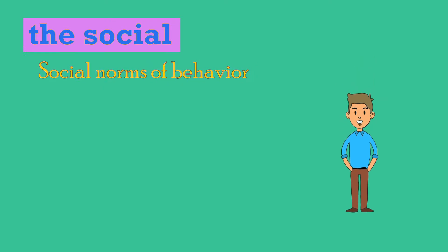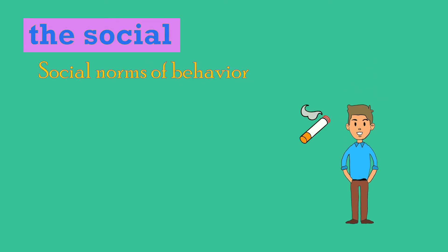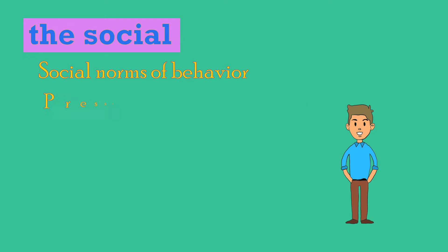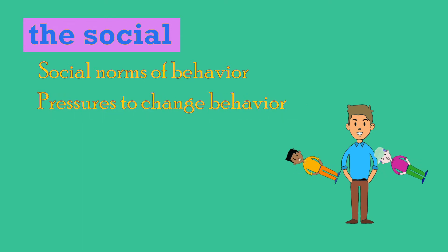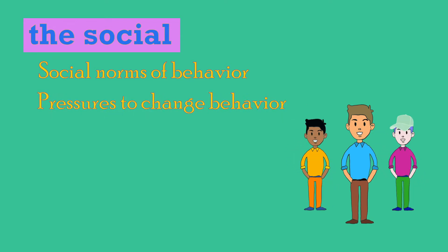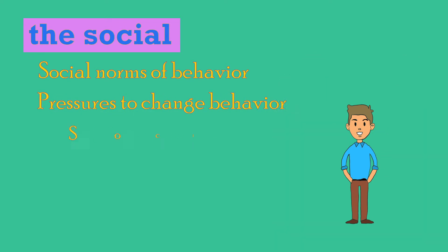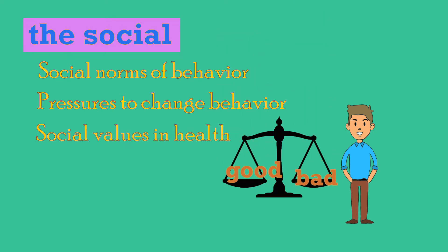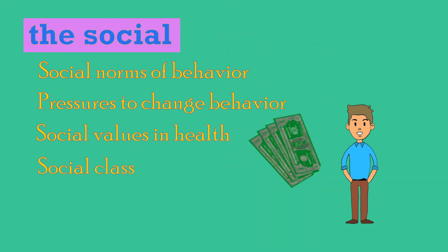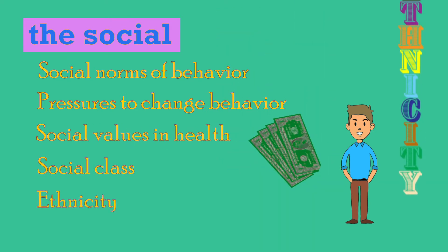The social aspects of health are described in terms of social norms of behavior — for example, the social norm of smoking or not smoking. Pressures to change behavior, which could be from peer group expectations or parental pressure. Social values on health, whether health is regarded as a good or bad thing, as well as social class and ethnicity.